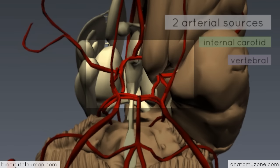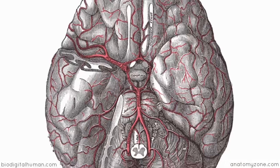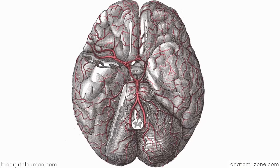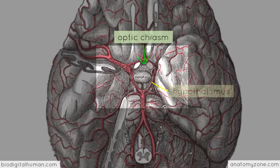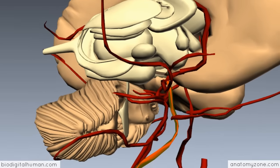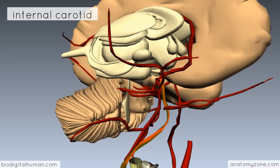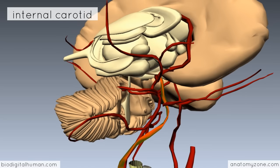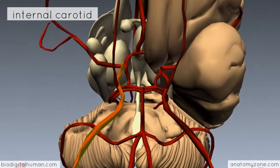Looking at the inferior aspect of the brain, switching over to a diagram, you can see how the circle of Willis is located at the base of the brain around the optic chiasm and the hypothalamus. Coming back to the model, with the internal carotid artery highlighted, you can see how it joins this circle at the base of the brain.